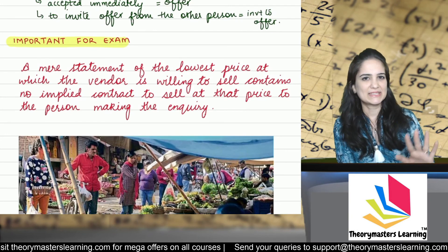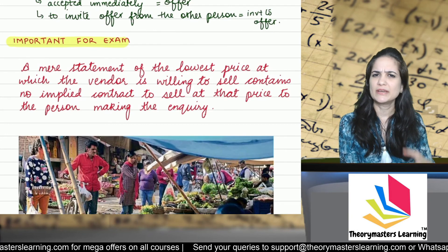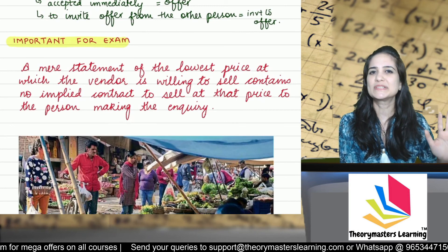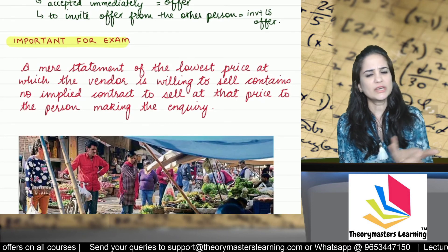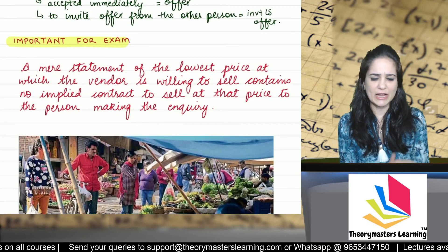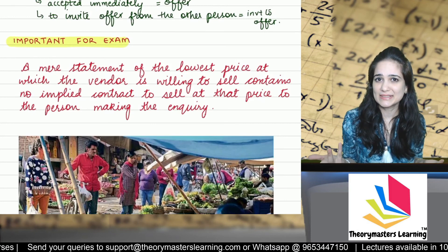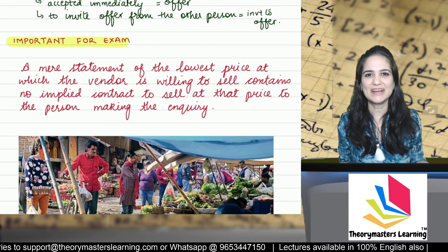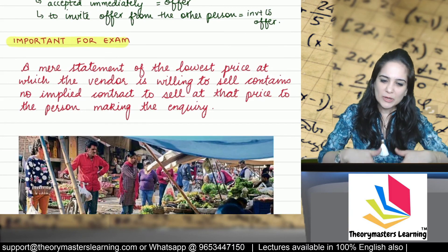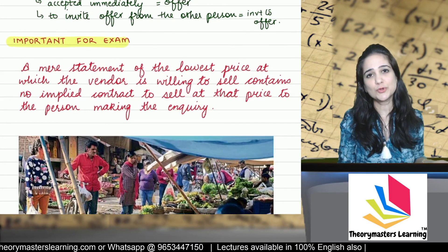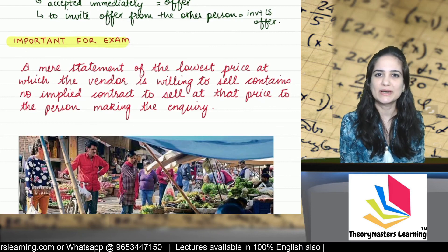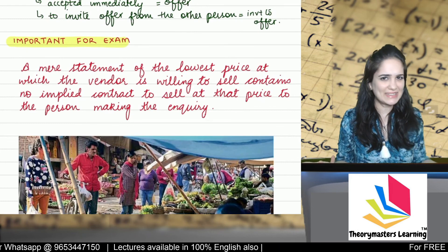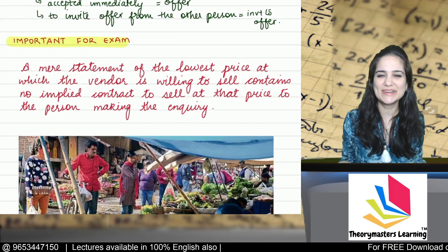In Harvey versus Facey, the question was: will you sell the Bumper Hall Pen? What is the lowest cash price? He just replied via telegraph giving the price — that doesn't mean he is ready to sell at that price. He just answered the question. He didn't say I am ready to sell. So just answering the price is not an offer, and you cannot accept it.